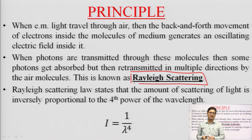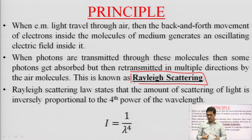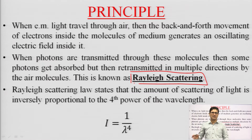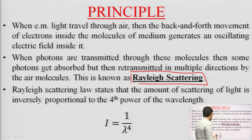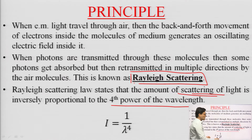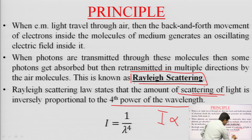Rayleigh explained this phenomenon: when any photon is transmitted through these molecules, some photons get absorbed but then retransmitted in multiple directions by the air molecules. This retransmission in multiple directions is called Rayleigh scattering. It states that the amount of scattering of light is inversely proportional to the fourth power of the wavelength. So the intensity of the scattered light is inversely proportional to the 4th power of the wavelength.